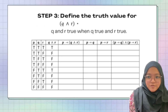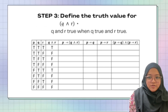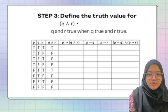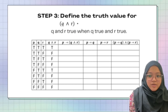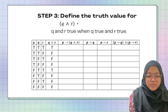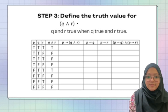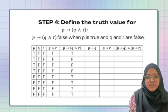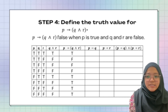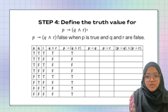Step three is to define the truth value for Q ∧ R: T, F, F, F, T, F, F, F. Step four is to define the truth value for P → (Q ∧ R): T, F, F, F, T, T, T, T.